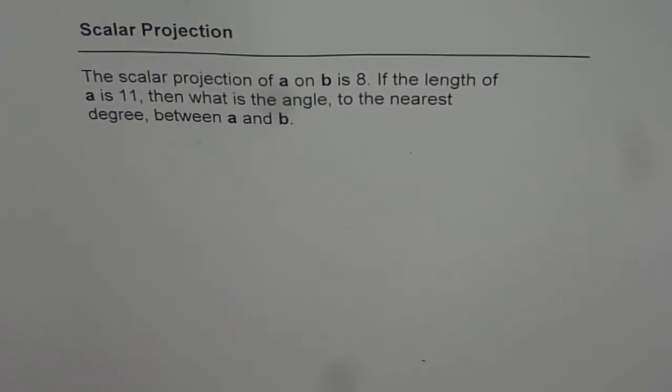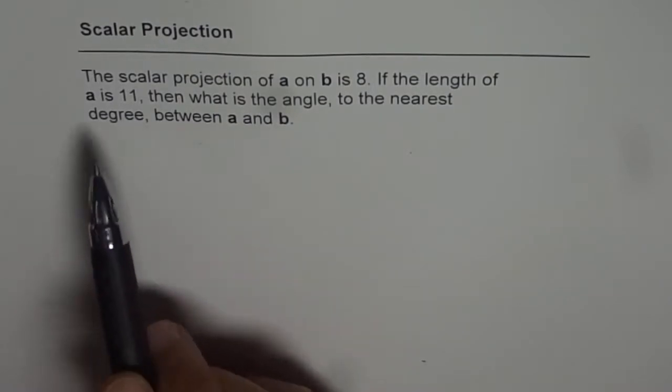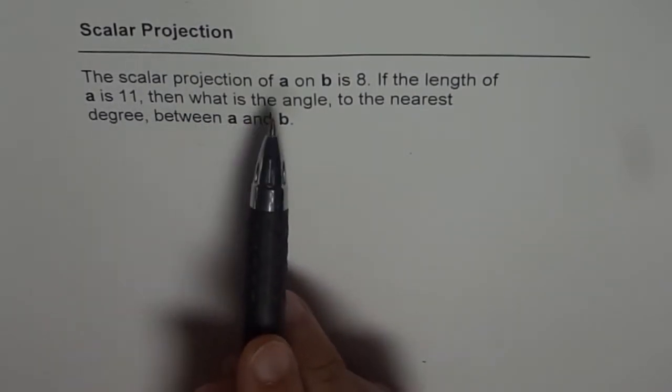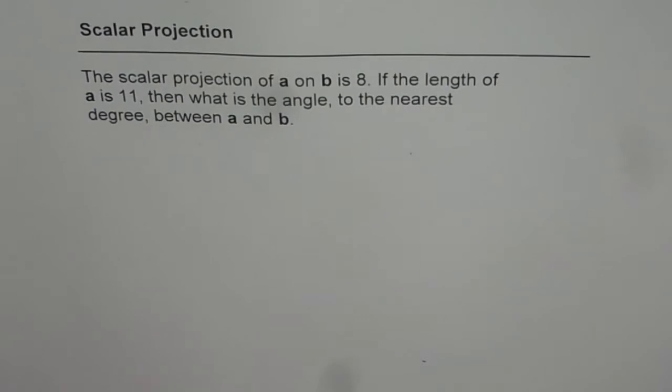Let us try to understand scalar projection from this example. The scalar projection of A on B is 8. If the length of A is 11, then what is the angle to the nearest degree between A and B?